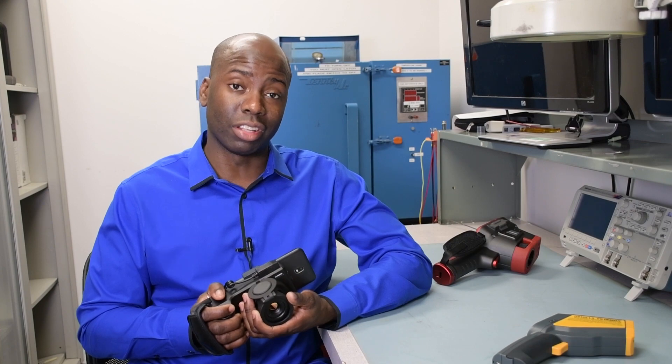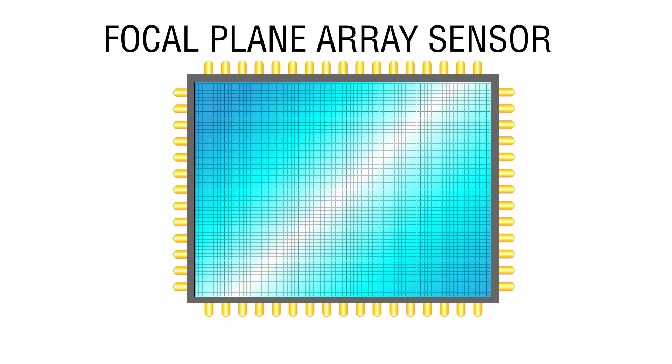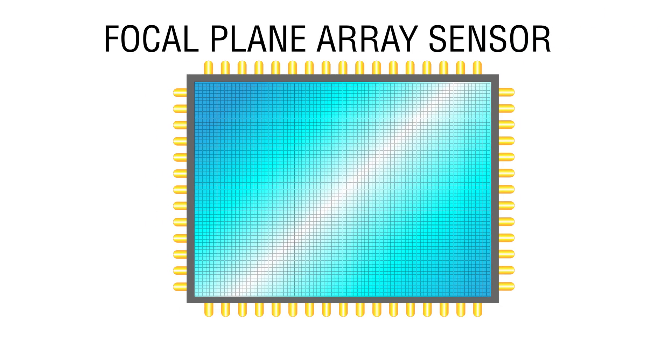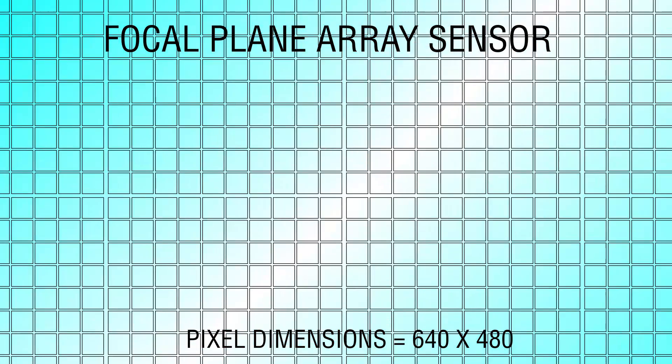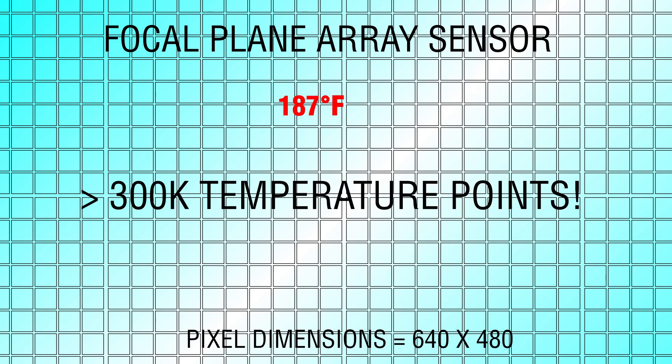Meanwhile, a thermal imaging camera like this one uses a focal plane array sensor. This thermal imaging sensor has pixel dimensions of 640 by 480, and with each pixel acting as a sensing element, that gives you over 300,000 individual temperature points on each thermal image or video.